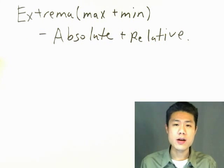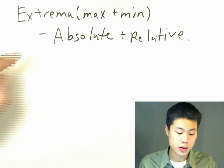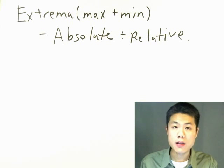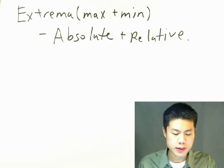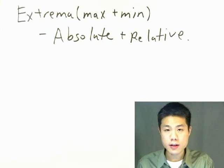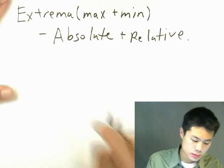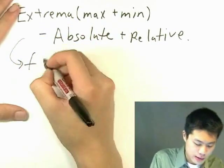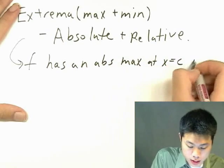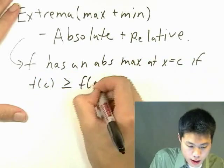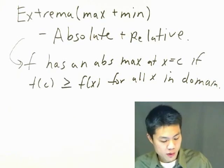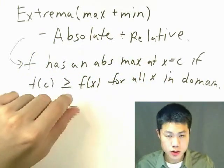There are two types of extrema: absolute and relative. We're going to talk about absolute extrema first. The absolute maximum of a function on an interval is the largest value of the function on that interval, and similarly the absolute minimum is the smallest value. More technically, f has an absolute max at x equals c if f(c) is greater than or equal to f(x) for all x in its domain. For the minimum, you just replace max with min and reverse the inequality.